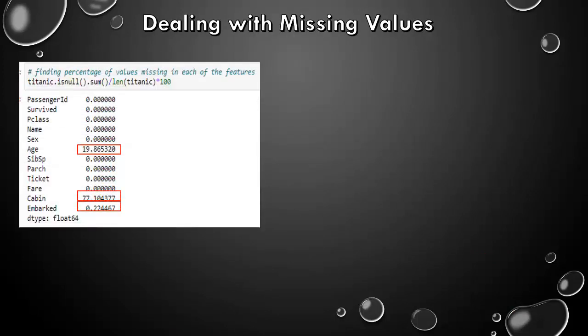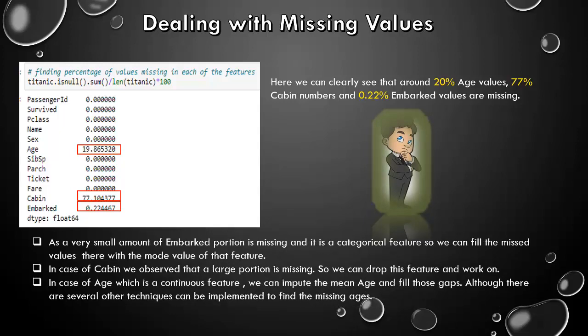Now, the most important part: dealing with missing values. As we can clearly see that around 20% age value, 77% cabin numbers and 0.22% embarked values are missing. What to do? Let's see. It's a very small amount of embarked portion is missing and it is categorical feature. So we can fill the missing values there with the mode value of that feature. In case of cabin, we observe that a large portion is missing, around 77%. So we can drop this feature and move on. And in case of age which is a continuous feature, we can impute the mean age and fill those gaps. Although there are several other techniques that can be implemented to find the missing ages.